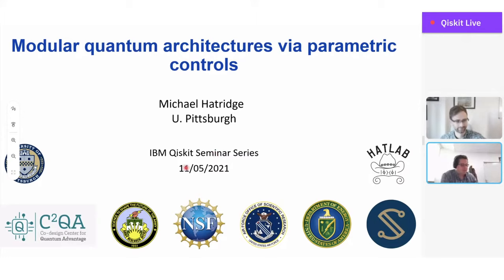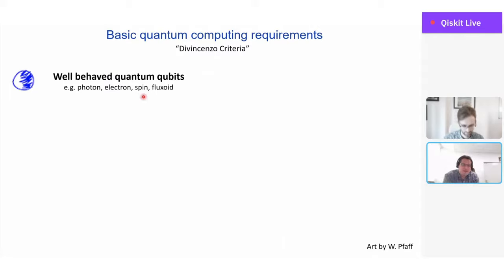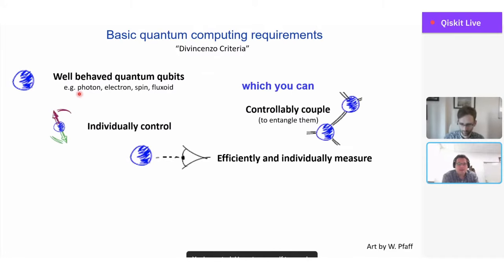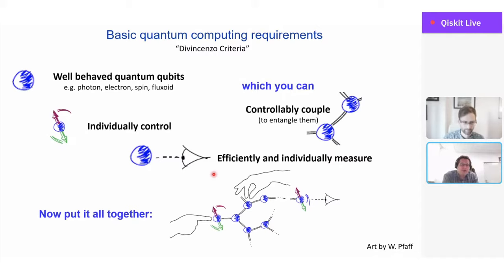Thank you very much, Zlako, for that very kind introduction. To kick us off today, I'm very much a person who builds circuits for a living. If we're going to talk about building quantum hardware, it's worth easing into it from the perspective of what you need for a quantum computer. It doesn't matter if you're using photons, electrons, spins, or something exotic — you need some kind of well-behaved quantum qubit, a two-level system you can create and initialize, controllably couple together, do individual qubit control, and efficiently and individually measure. When you put it all together, you get this new kind of quantum matter built out of big stuff like aluminum blocks and sapphire chips, but effectively it acts like artificial atoms that don't obey the laws of classical mechanics anymore.